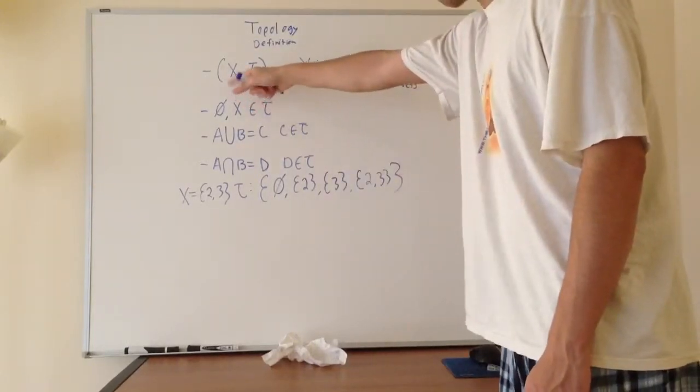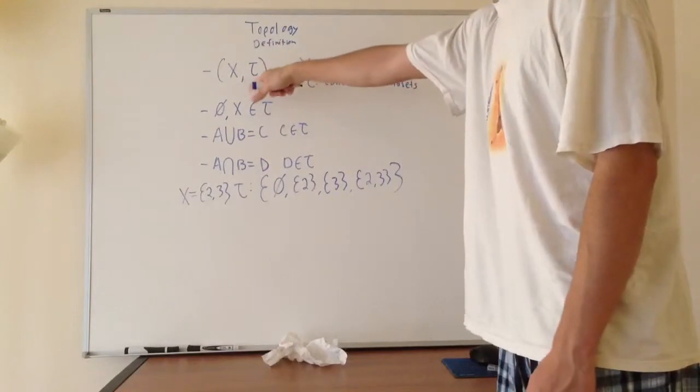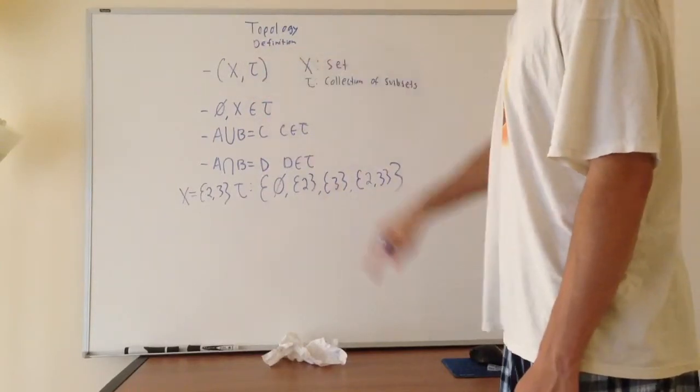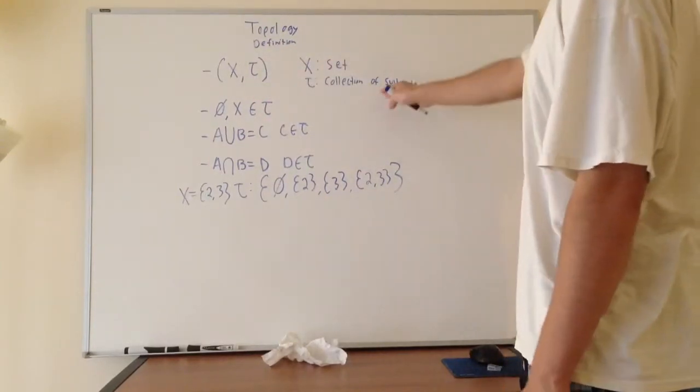It's simply written like this: you have kind of like an ordered pair where you have X as your set and C or tau as your family of subsets. I wrote it over here so we won't forget what's going on.